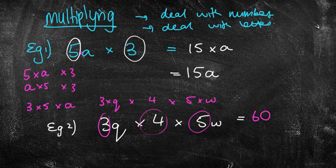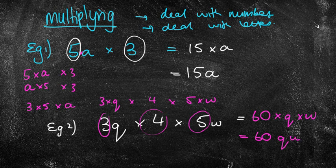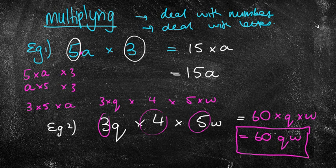But now I'm left with q times w. Now they're not like terms are they? And so what we're actually going to do is just take away the multiplication signs. And instead of having 60 times q times w, we're just going to write it as 60qw. And that's my final answer. Because you know they're not the same terms. So I'll just take the times away. Because that's a much simpler way of writing it. It still means 60 times q times w. Once again the q, I'm going to put it first because it comes first in the alphabet.